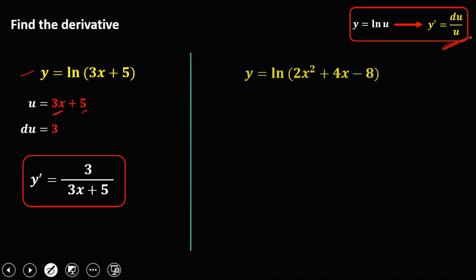For this given, u is equal to 2x squared plus 4x minus 8. To get the derivative of u: derivative of 2x squared is 4x, derivative of 4x is 4, and the derivative of 8 is 0, so du is 4x plus 4.